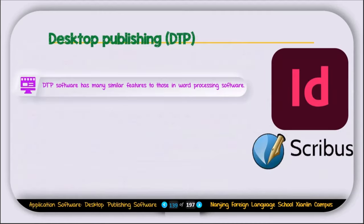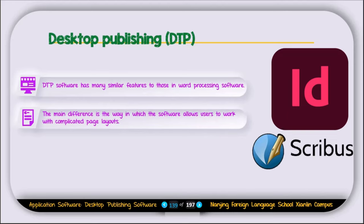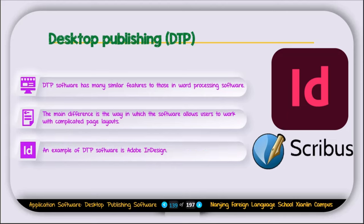The next type of application software is called desktop publishing software, or DTP. DTP software has many similar features to word processing software — both are used to write text and create documents. The main difference is the way in which DTP software allows users to work with complicated page layouts. Microsoft Word does not allow you to create a complicated layout, but desktop publishing apps do. For example, your textbook has different sections and boxes — to create those layouts you need a DTP app. An example of DTP software is Adobe InDesign.